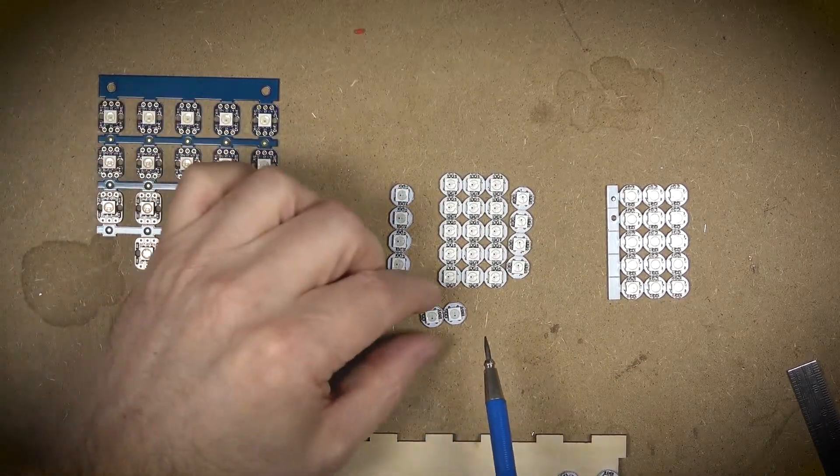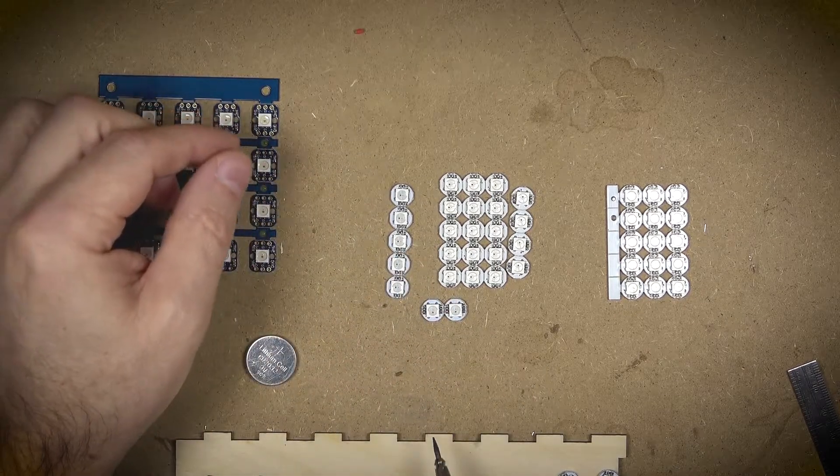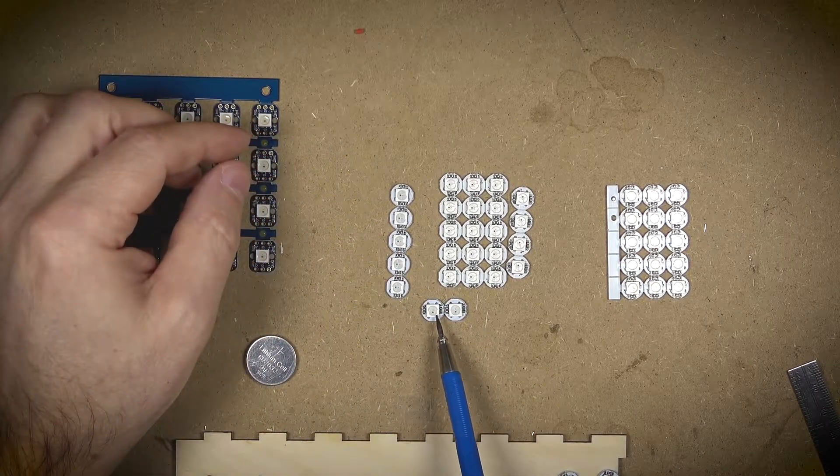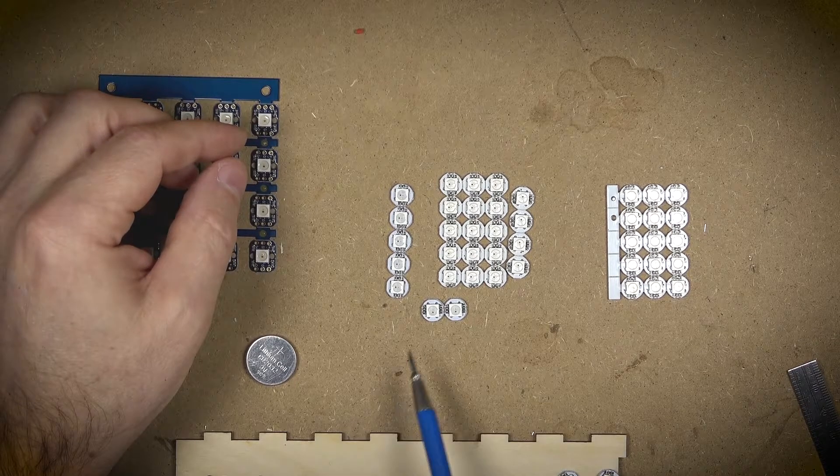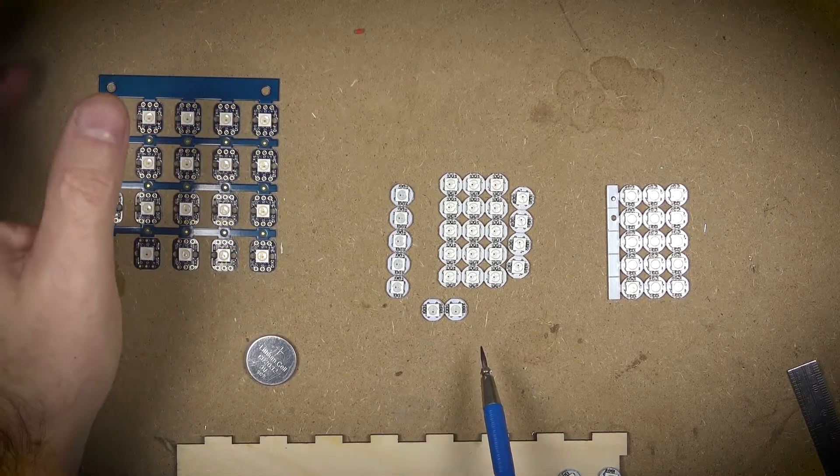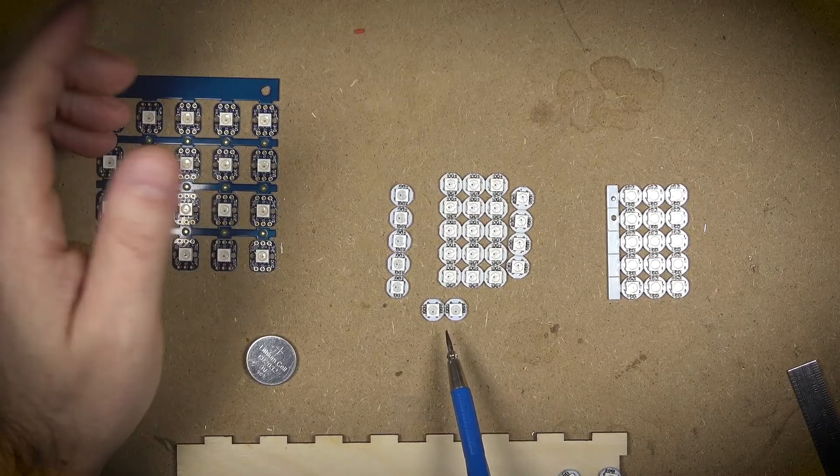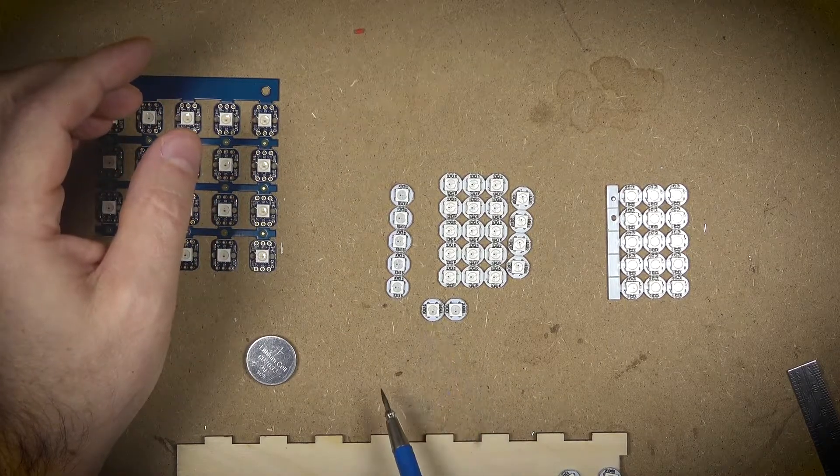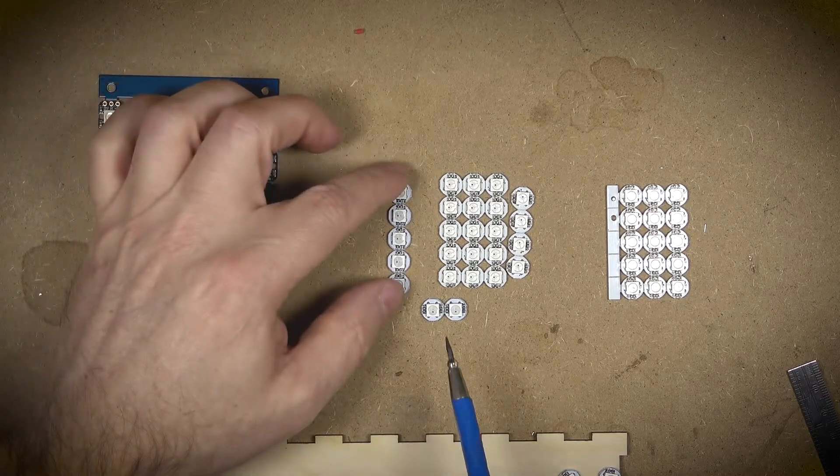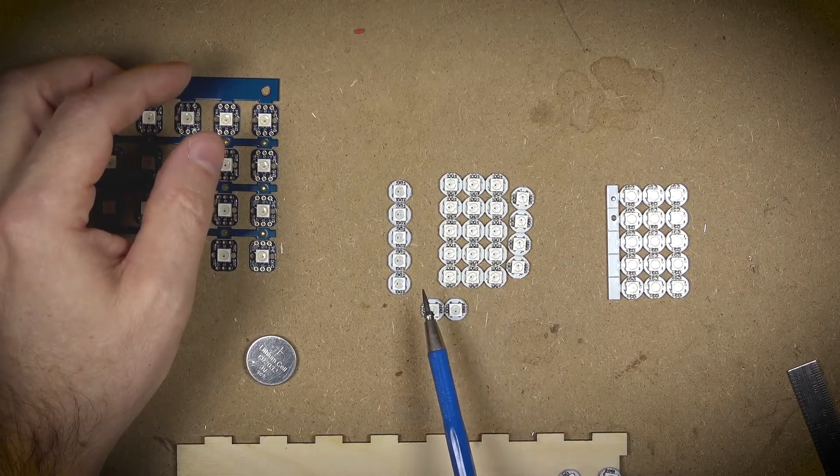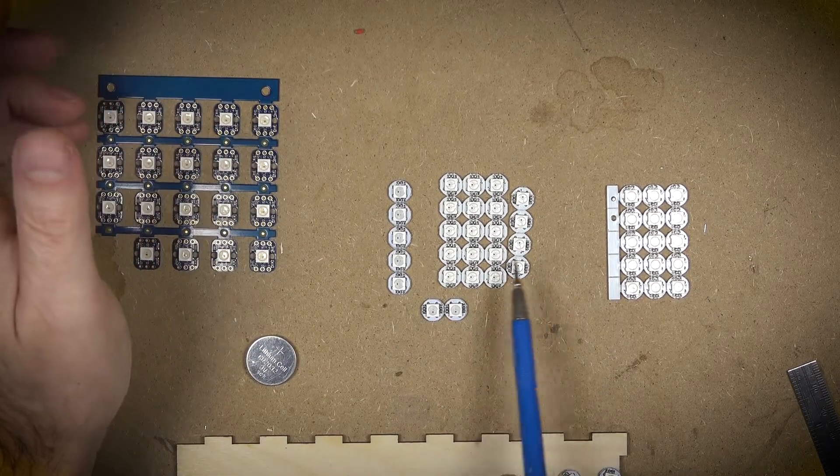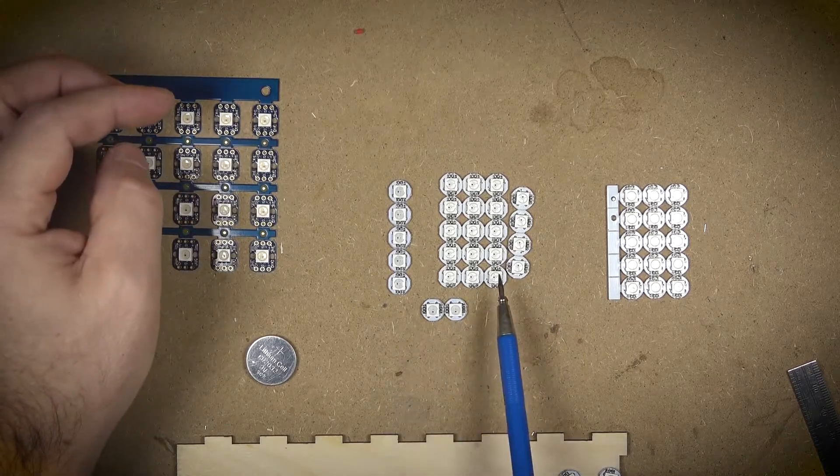Today we're going to talk about these buttons because I find these to be of all the NeoPixels the most affordable when buying them in bulk. They tend to be somewhere in the 50 to 60 cents per LED range, which is really not too shabby. Now the one downside is they do require a little bit of soldering onto solder pads and that's what we're going to talk about today.